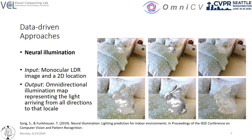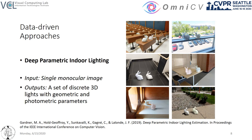Similarly, in Neural Illumination, a spherical illumination map is regressed from a single perspective image and a location on it, which represents the lighting arriving from all directions to that location. Finally, Gardner et al. take another direction by regressing parametric lights in a scene that allow for finer-grained lighting of synthetic objects.